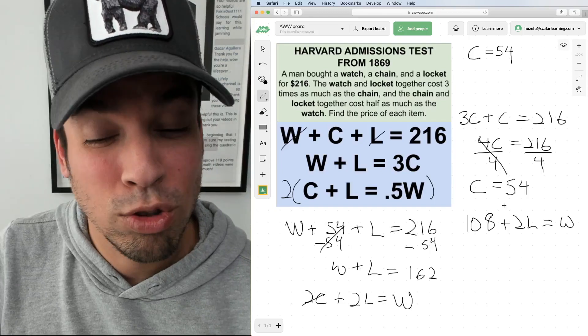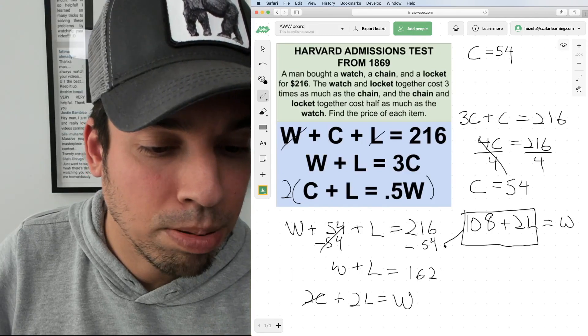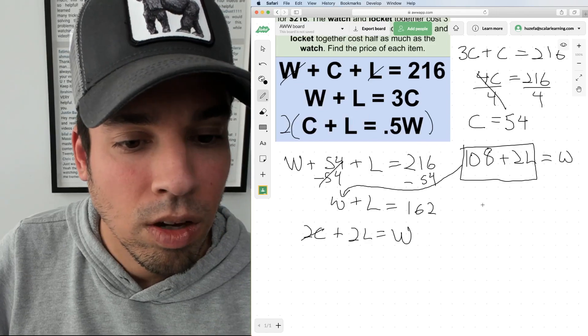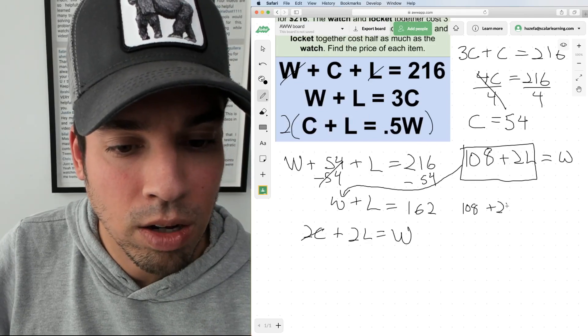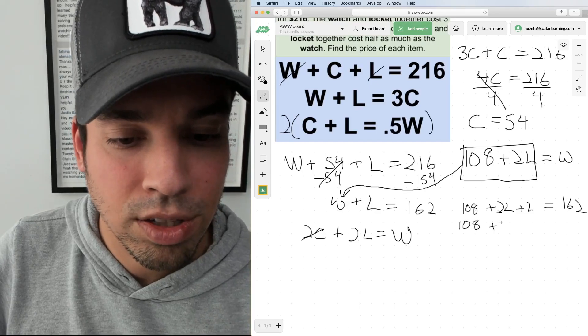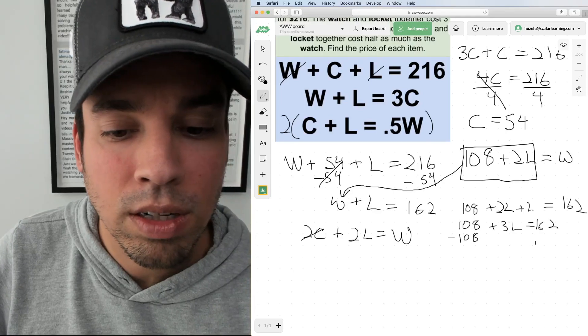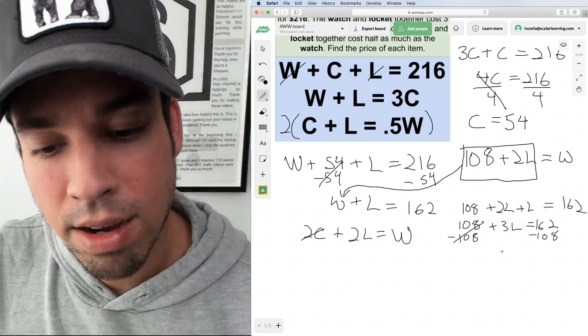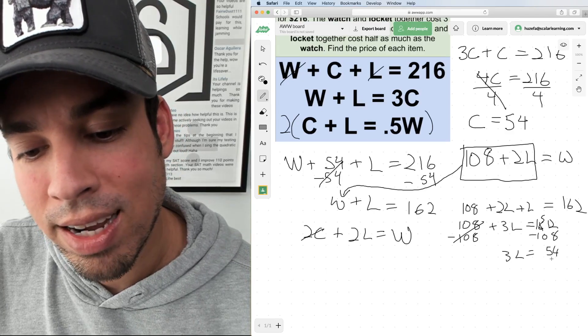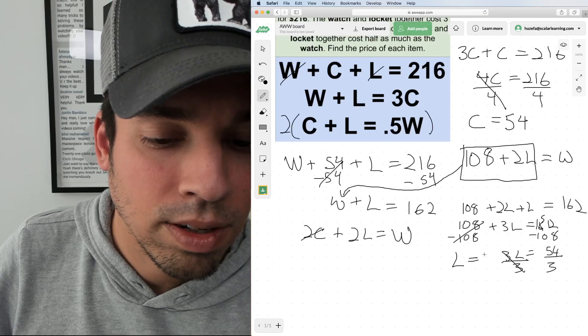And guess what I can do now? I can do a little substitution again. If I know that the watch equals 108 plus 2L, I can take this quantity and plug it into this equation for the watch. So now we have 108 plus 2L plus L equals 162. These guys combined: 108 plus 3L equals 162. Subtract 108 from both sides, and I have 3L equals 54. Divide by 3 and the locket equals $18.